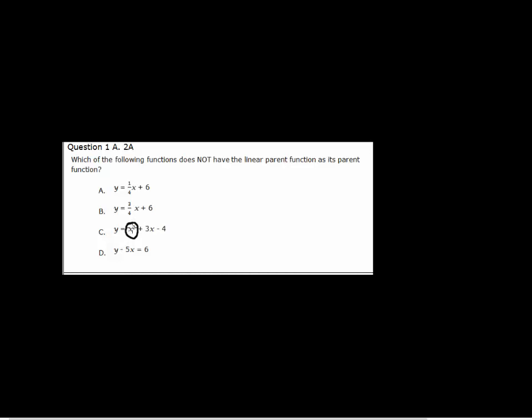This right here, the x squared term, is the key to seeing that this is not a linear function. This here is a linear function with a slope of one-fourth. This one, a linear function with a slope of three-fourths. And this here is a linear function written almost in standard form. If you add 5x to both sides, it becomes very clear that this is a linear function with a slope of five.